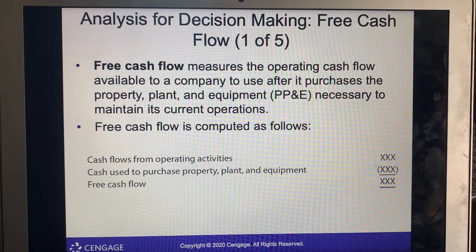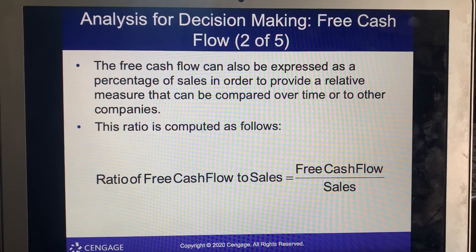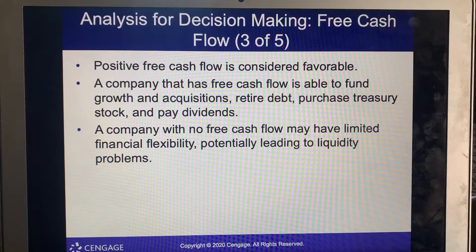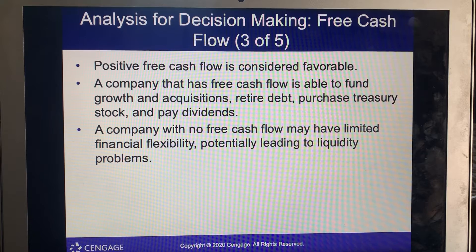Free cash flow divided by sales gives the ratio of free cash flow to sales. Positive free cash flow is considered favorable — a company with free cash flow is available to fund growth and acquisitions, retire debt, purchase treasury stock, and pay dividends.